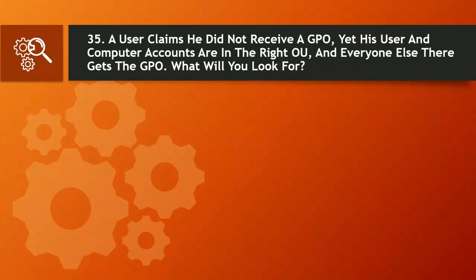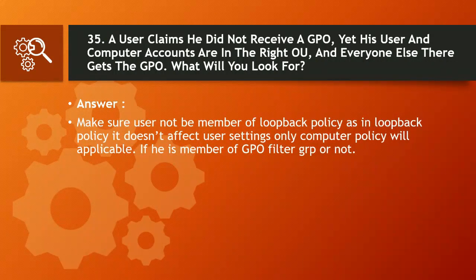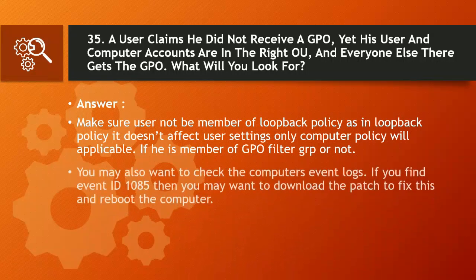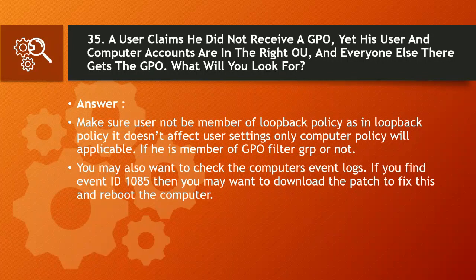Question 35: A user claims he did not receive a GPO, yet his user and computer accounts are in the right OU and everyone else gets the GPO. What will you look for? Answer: Make sure the user is not in a loopback policy — in loopback policy it doesn't affect user settings, only computer policy will apply. Check if he is a member of a GPO filter group or not. You may also want to check the computer's event logs. If you find event ID 1085, you may want to download the patch to fix this and reboot the computer.